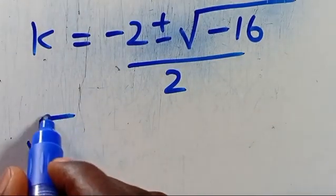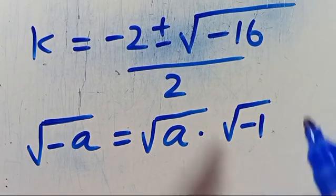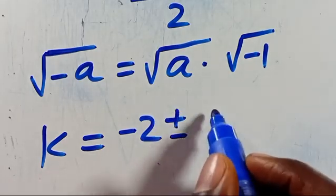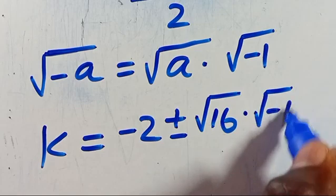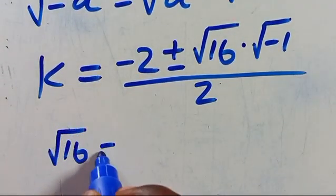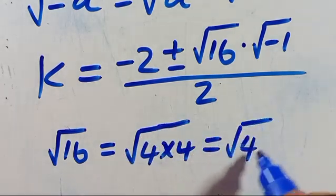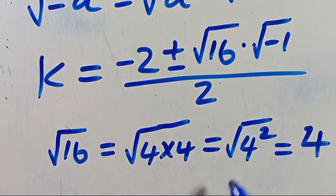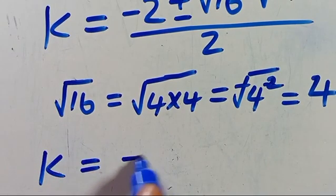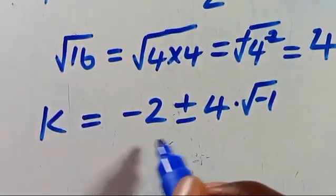Mind you, when we have the root of minus a, it can be simplified as root of a multiplied by root of minus 1. So we apply it here, meaning we have k equals minus 2, positive or negative root of 16 multiplied by root of minus 1, then all divided by 2. We note that root of 16 equals root of 4 squared, and this equals 4 because the root and the square cancel out.